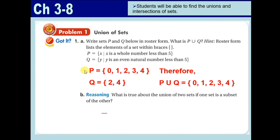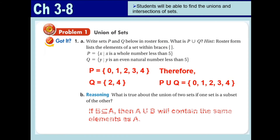It is just the same as your given set P. Here is a follow-up question: what is true about the union of two sets if one set is a subset of the other? A subset is a set under a bigger set. Since Q is a subset of P — because 2 and 4 are elements inside set P — then the union of P and Q contains the same elements as A. So if B is a subset of A, A union B equals A.